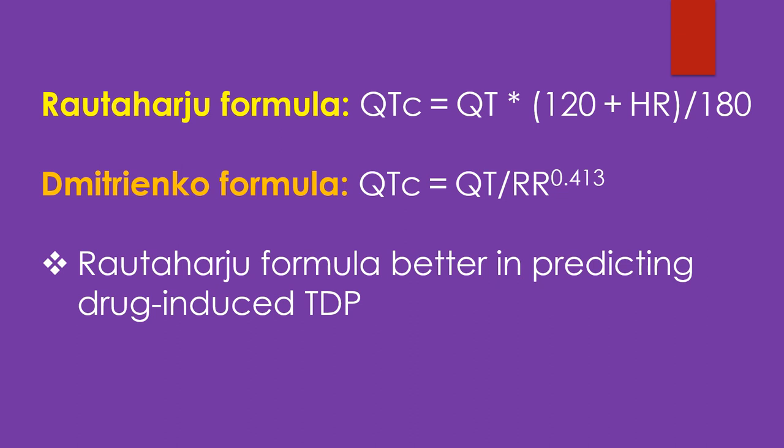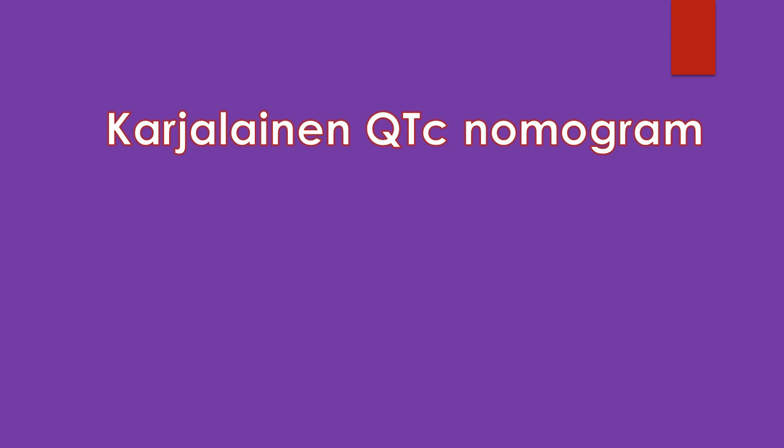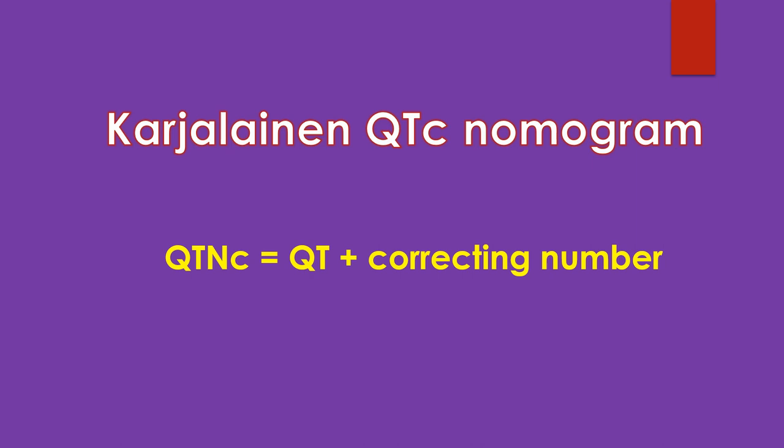Rotharju's formula has been shown to be better in predicting drug-induced torsades de pointes than Besset's formula. A normogram known as the Cardinalin QTC normogram for correction of QT interval has also been suggested by Cardinalin and colleagues, in which QT-NC equals QT plus a correcting number.